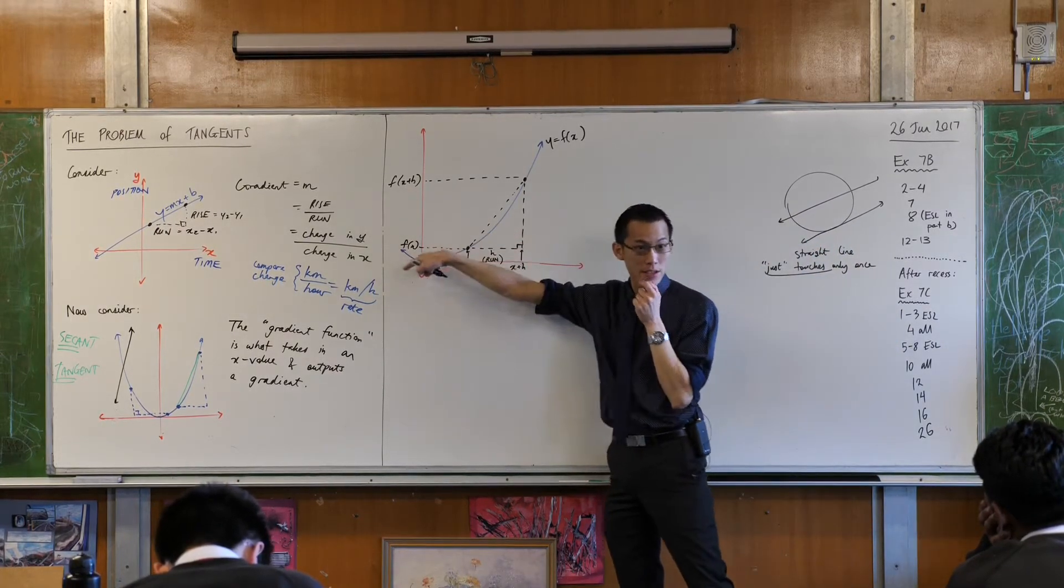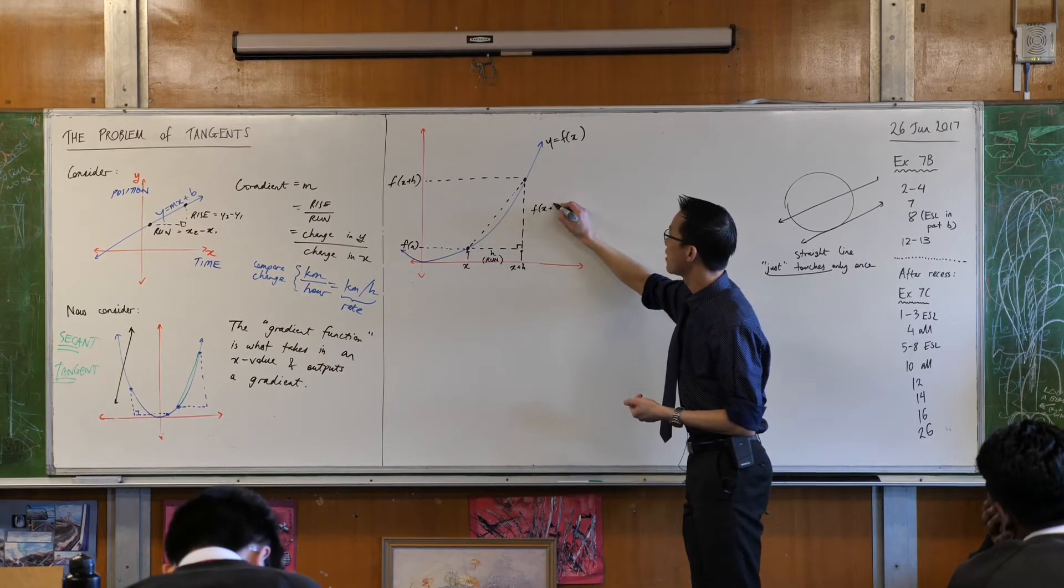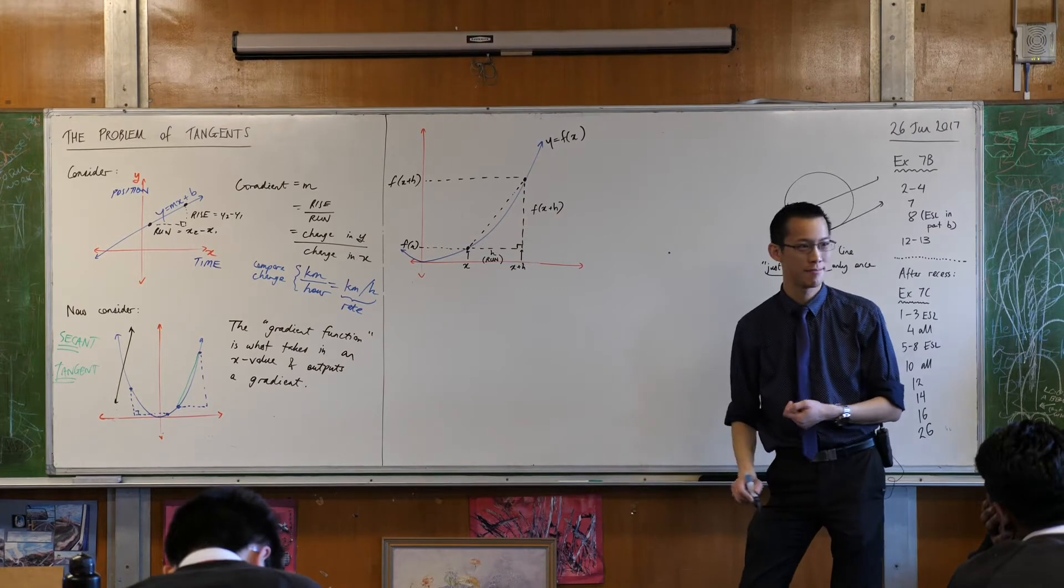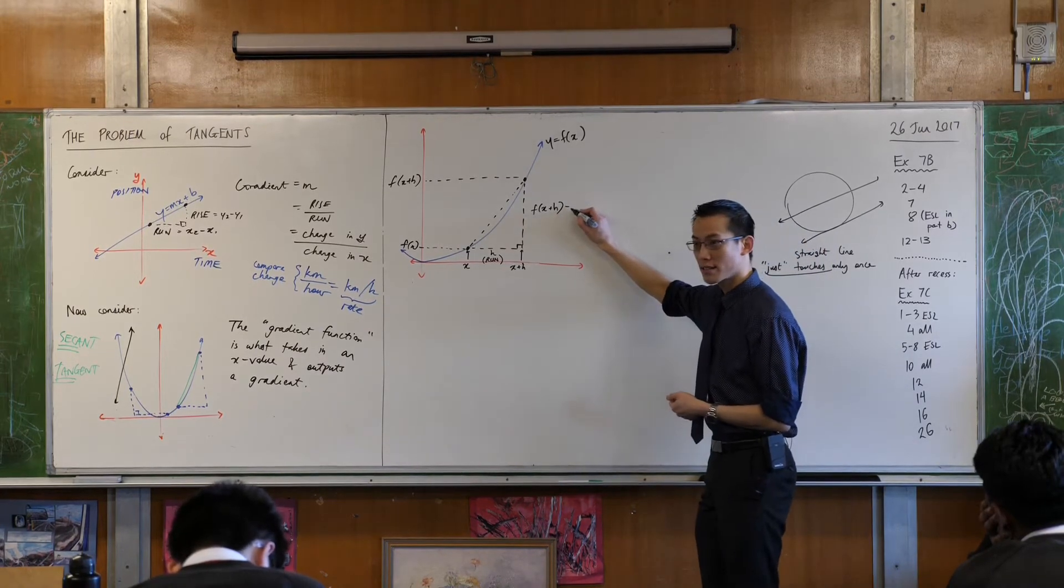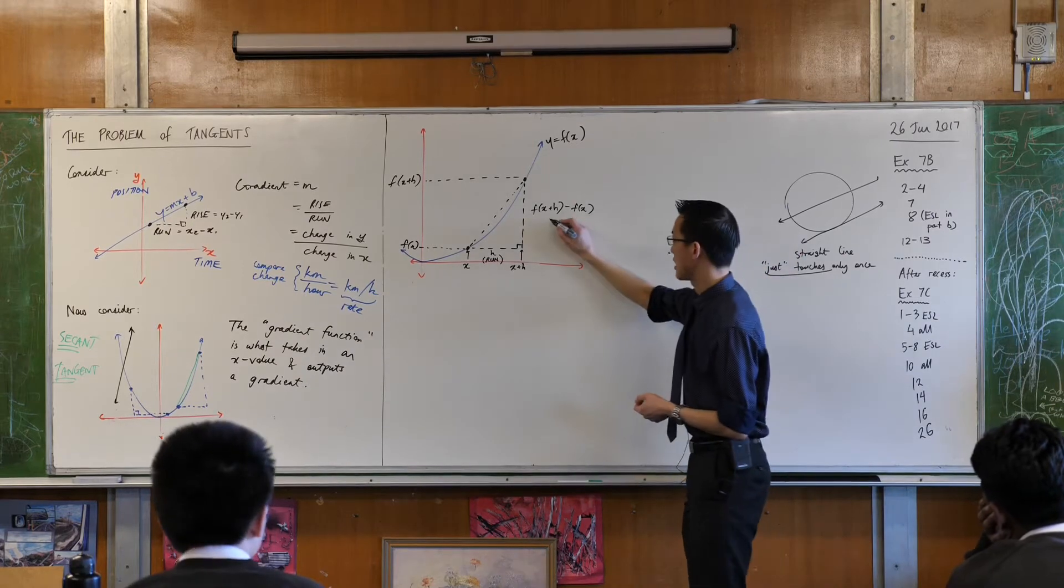It's going to be this guy, take away this guy, right? That's the difference between them. So I've got that top y coordinate, and then I subtract the bottom y coordinate. Do you agree? And that's the rise.